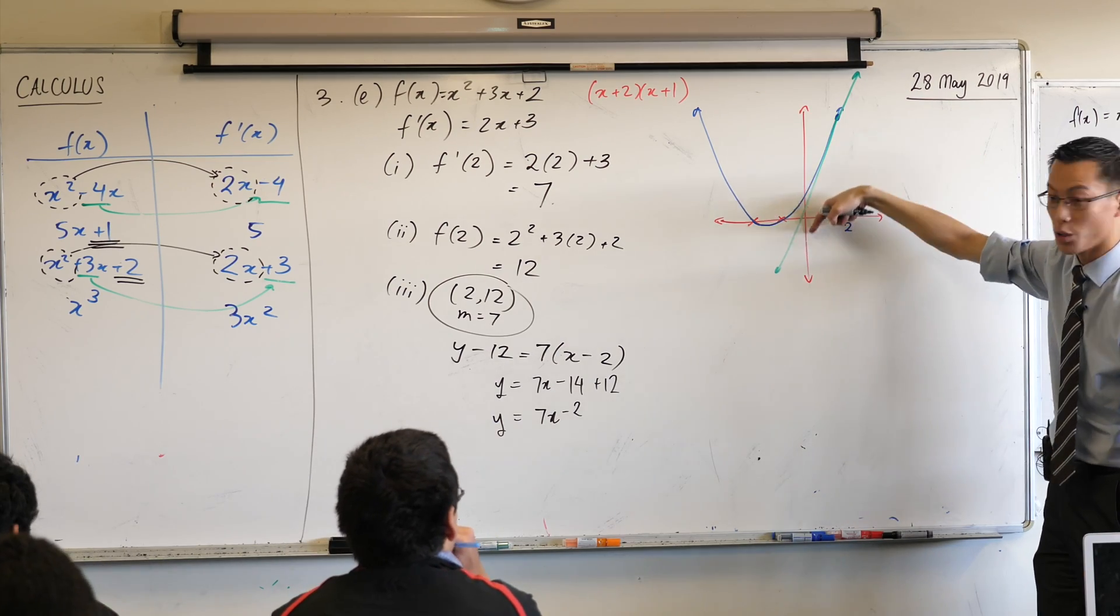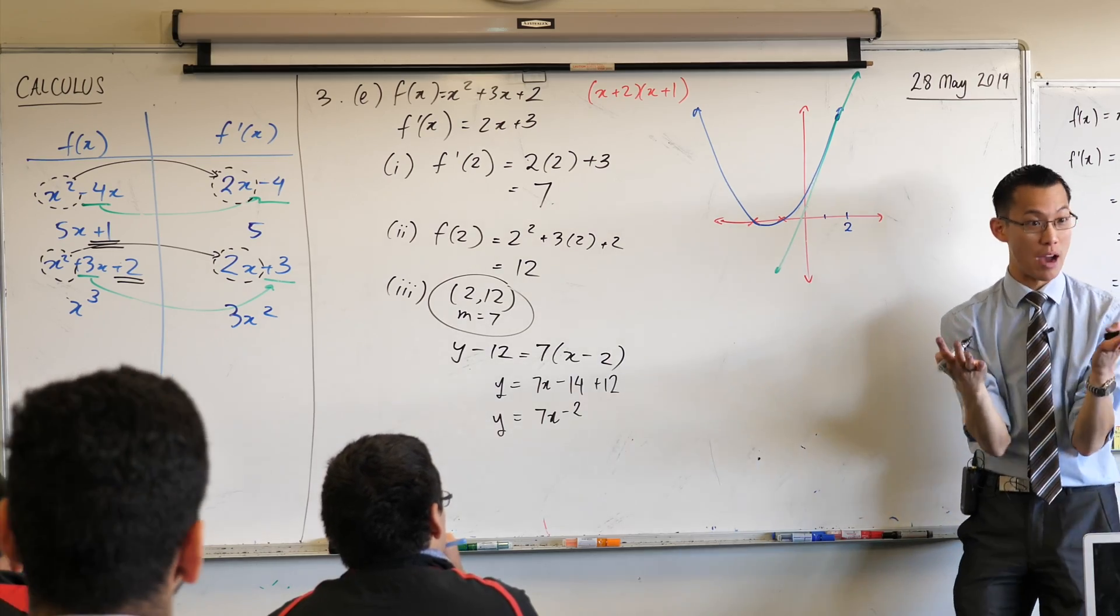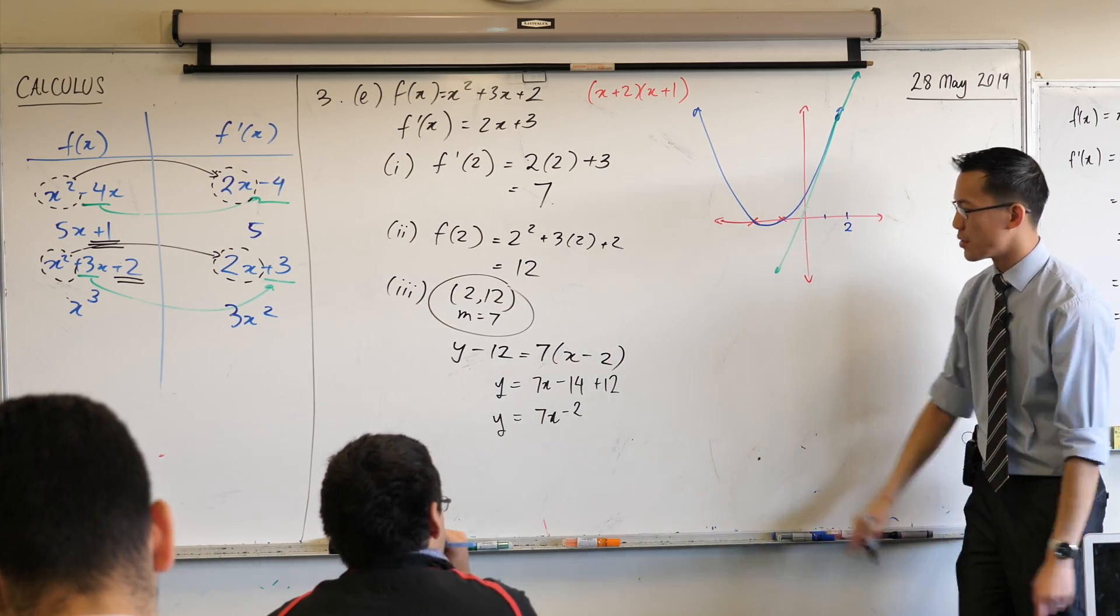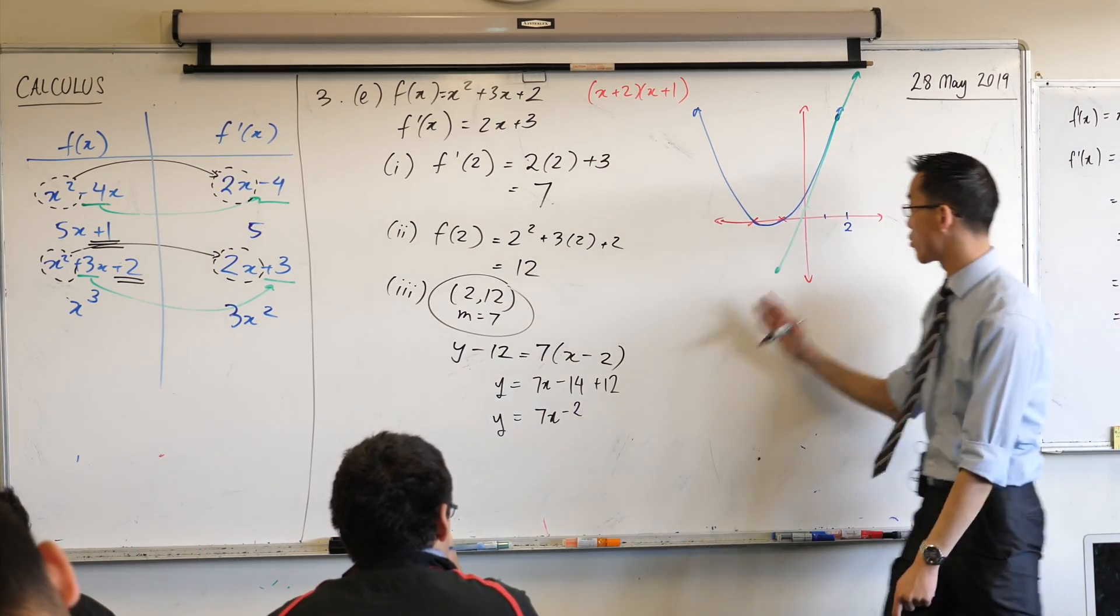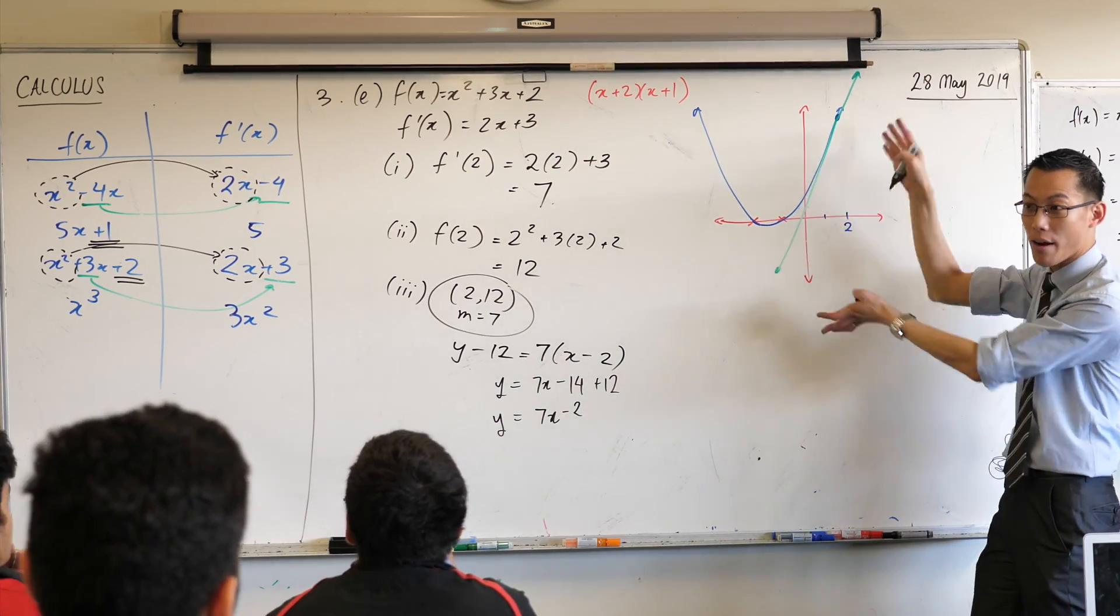Now, you can see my graph is not all that accurate. It should have been steeper, actually, because it should have gone through at minus 2. But not too bad. I just eyeballed it. Okay? So now that you know what it is, you can draw a much more accurate version of it. 7x minus 2 is the equation of this green line. You've used calculus to be able to find where exactly this is.